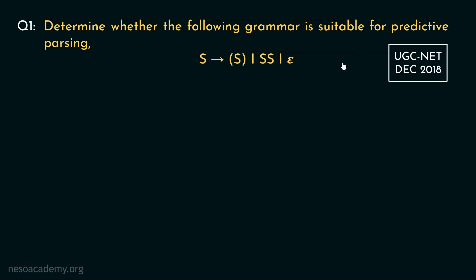If you remember, in the previous session I told you that except the operator precedence parser, all the other parsers reject ambiguous grammars. So if we can determine whether this grammar is ambiguous or not, we can state whether this one is suitable for predictive parsing. If it is ambiguous, it's not suitable. So let's try to solve this.